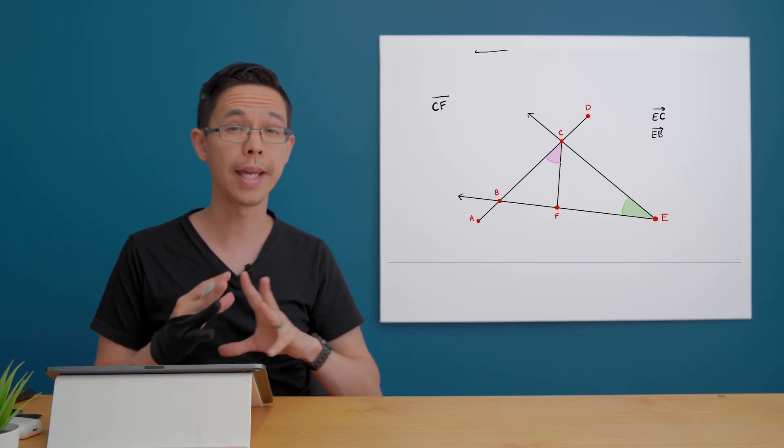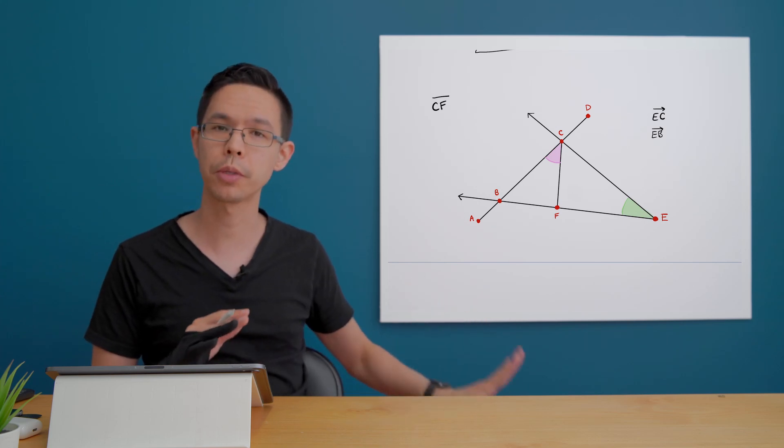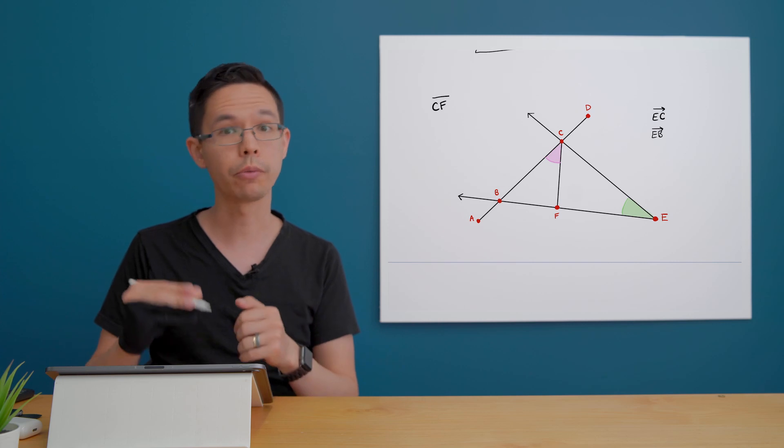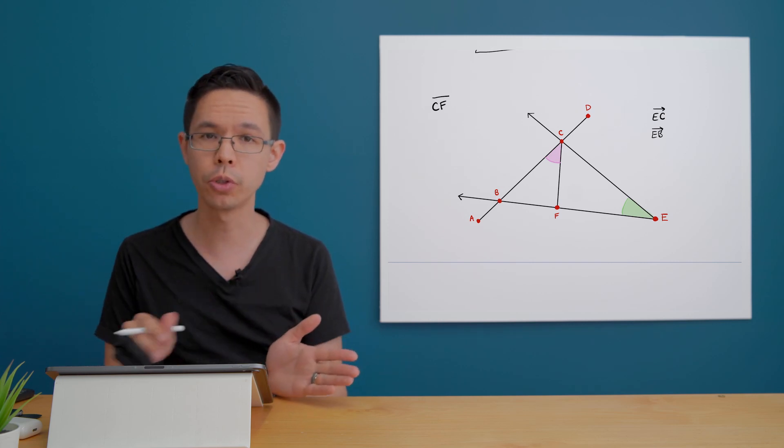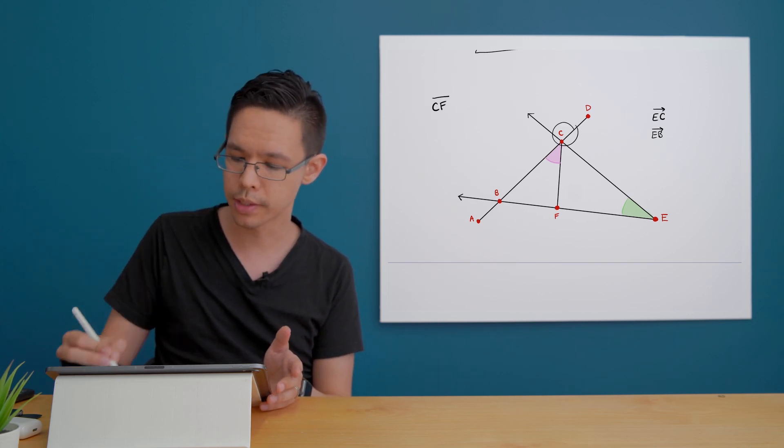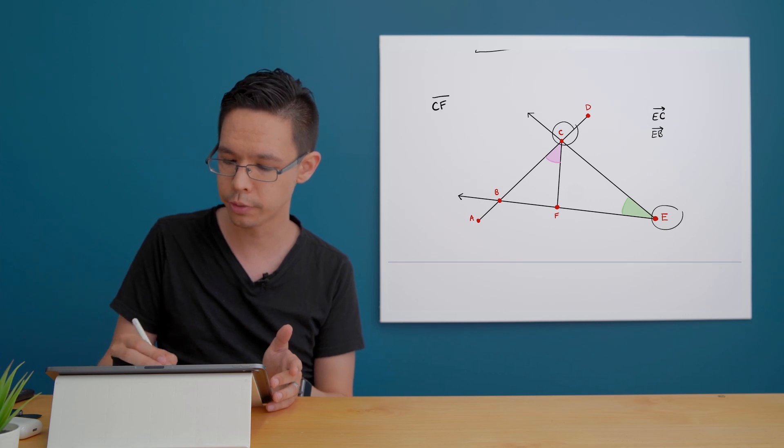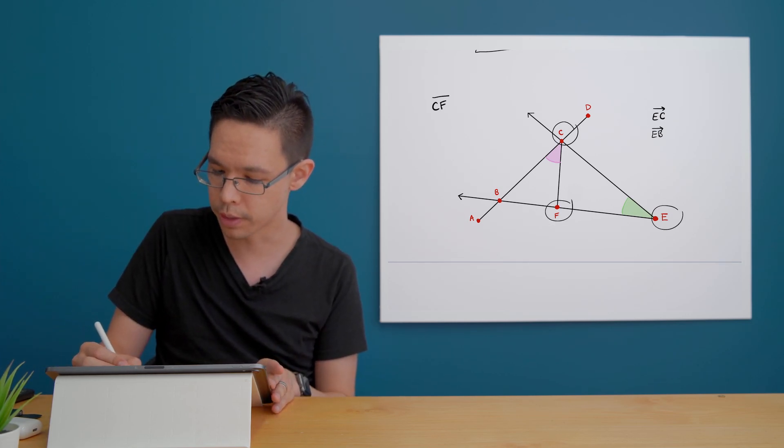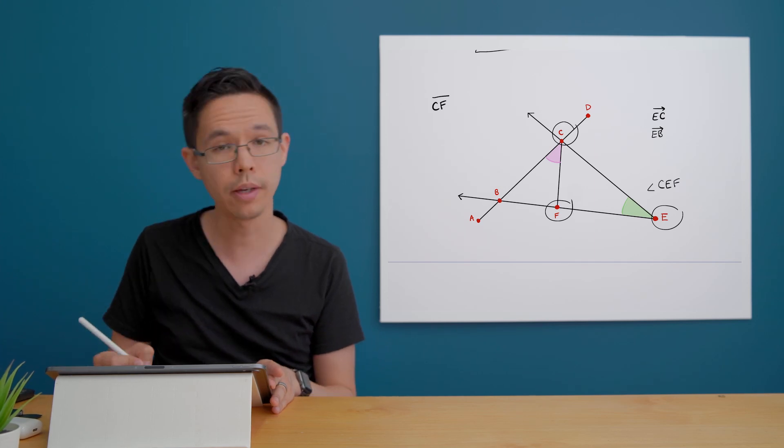All right. Lastly, we've got some angles here that I've shaded in. So let's do the green one first. How would I refer to that one there? Well, I refer to it by the points that form the angle. So the point C through to point E through to point F in that order, I would say the green one is the angle formed by C, E, F.